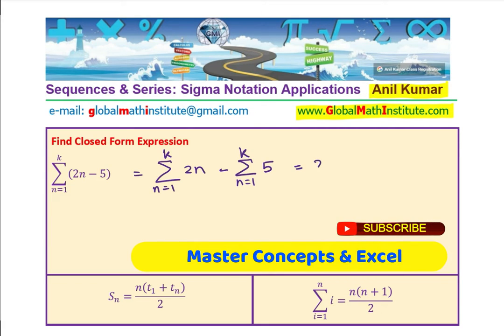Now sum of 2n means 2 is a constant we can take it out, right? Applying the properties of summation, n changes from 1 to k of n. Minus 5 is also a constant and there will be how many 5s? There will be k 5s, right?